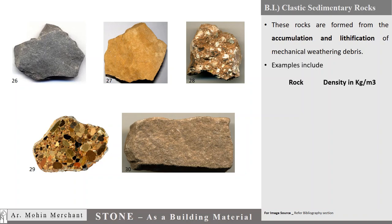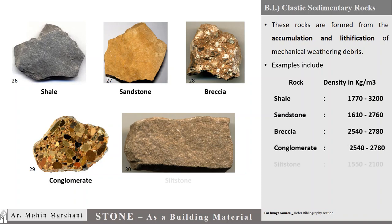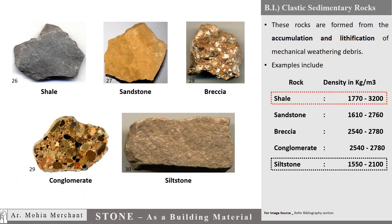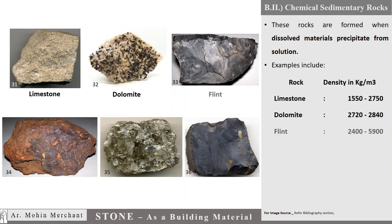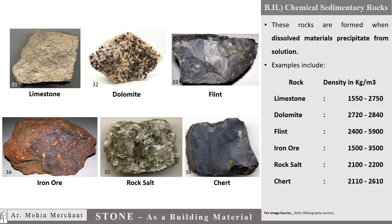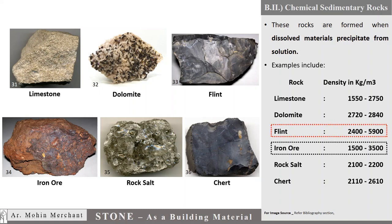Examples of clastic sedimentary rocks include Limestone and Dolomite. Chemical sedimentary rocks are formed when dissolved materials precipitate from solution. Examples include Limestone, Dolomite, Flint, Iron ore, Rock Salt, and Chert. Density of these rocks varies from 1500 to 5900 kg per cubic meter.